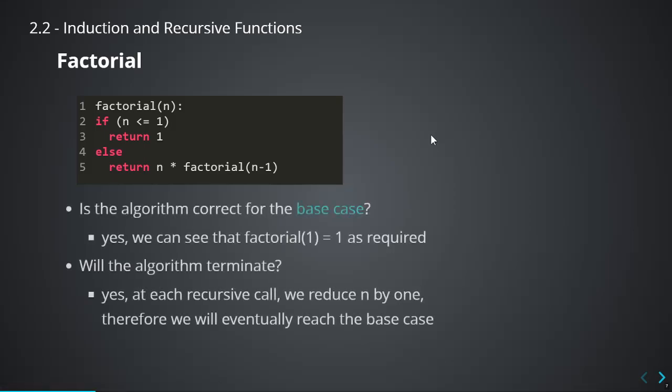In both cases, we always start with the base case. We have to show that this algorithm is correct when n is equal to 1. And yes, it is — because factorial(1) is just 1, that's the definition. So the algorithm is correct for the base case. Will the algorithm terminate? Yes — because every time you call this function recursively, you reduce n by 1. So eventually n will hit 1. If n is greater than 1, it will be reduced down to 1, and if n is already less than 1, it will just return 1 and finish. So yes, it will terminate.